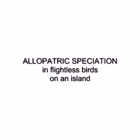Allopatric speciation is a biological process. It involves a species that is cut into separate groups by a geographical barrier, such as an earthquake, as I have used in my example. The separate species then separately evolve differently over a long period of time. The proof that they are now differing species is if they are introduced and are unable to mate anymore.